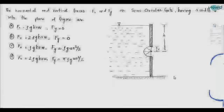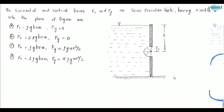Now let us see another problem on hydrostatic curved surfaces. This is a very important one. The problem is: find the horizontal and vertical forces FX and FY on a semicircular gate having a width W into the plane of the figure. The options are given as A, B, C, D and the figure is provided.